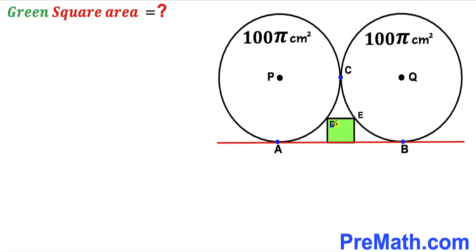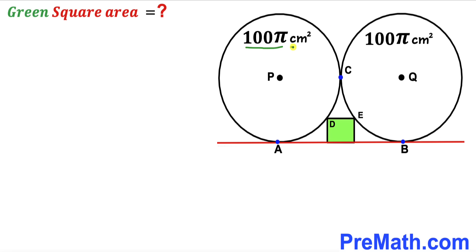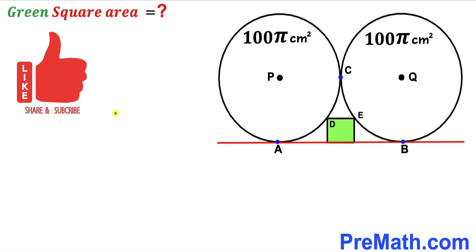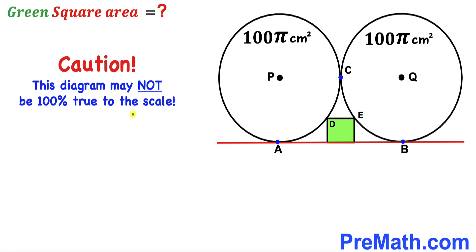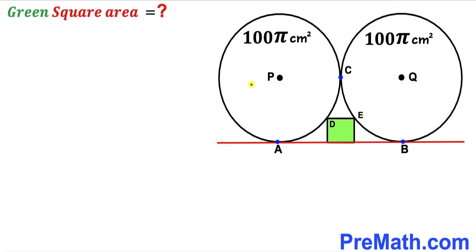Welcome to Pre-Math. In this video we have a green shaded square fully wedged in between two identical circles, such that points A, B, and C are points of tangency, and points P and Q are the centers of these circles. The area of each identical circle is given as 100π centimeter square, and our task is to calculate the area of this green shaded square. Please keep in mind that the figure may not be 100% true to scale.